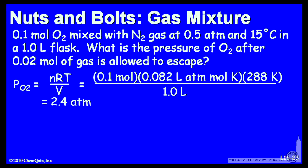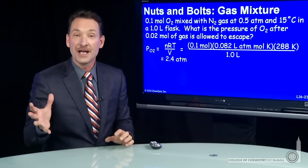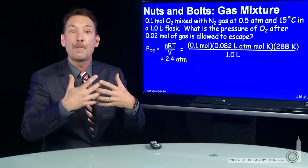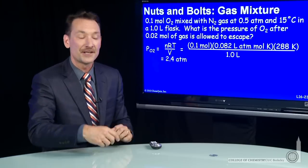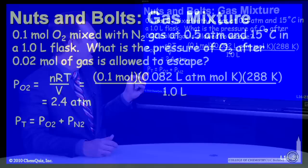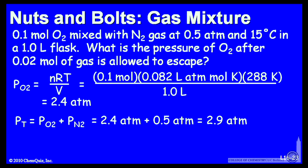The nitrogen is also in there exerting half an atmosphere of pressure. So you have two gases, each exerting a partial pressure. The total pressure is the sum of the two — the partial pressure from the oxygen plus the partial pressure from the nitrogen. The total pressure is just the pressure that each gas exerts, so that's 2.9 atmospheres.